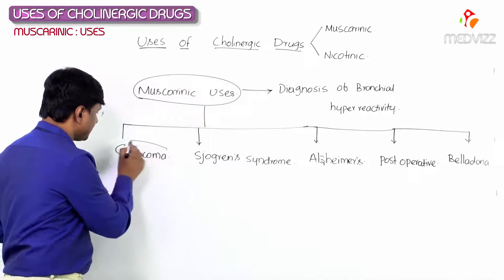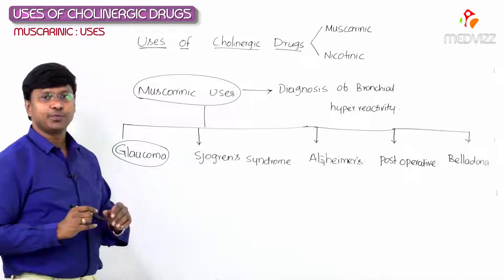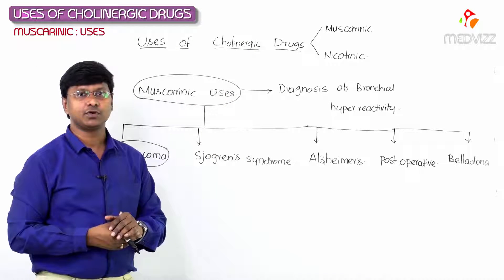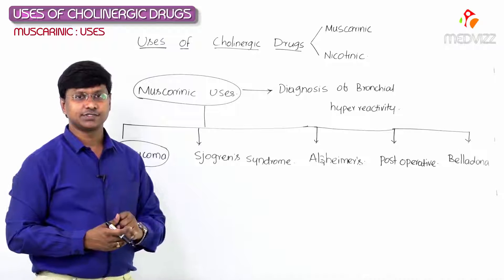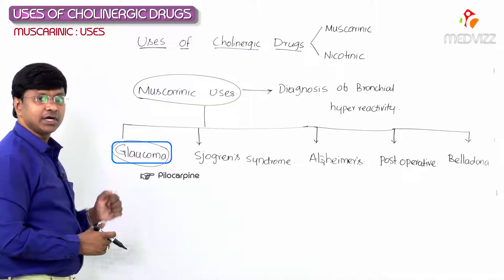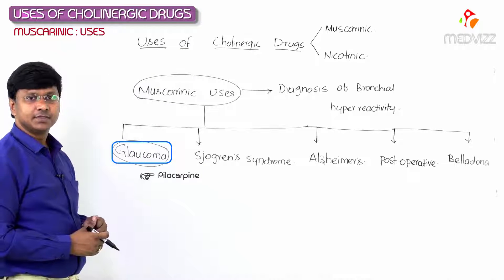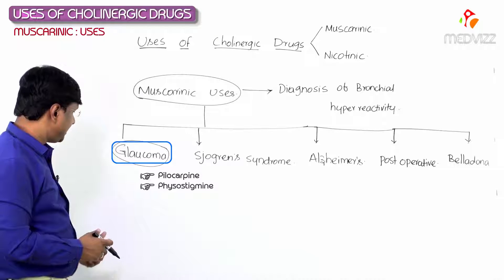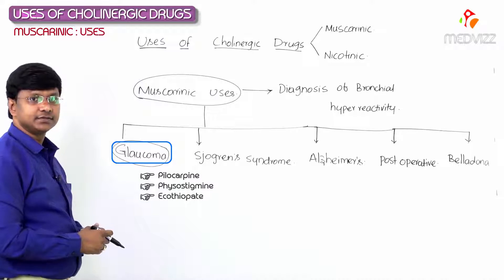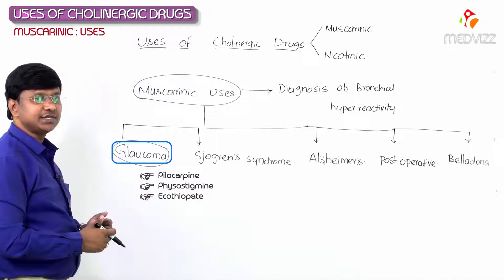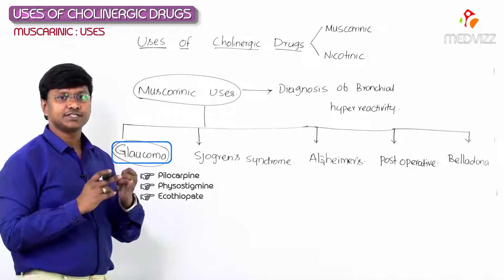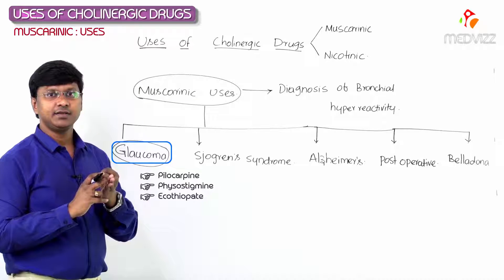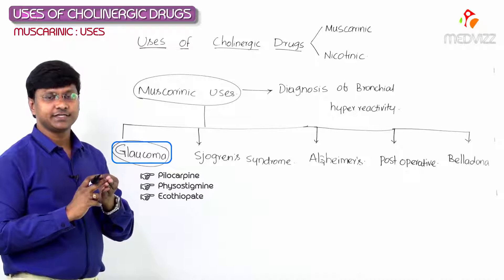Now, in the treatment of glaucoma there are three important cholinergic drugs: pilocarpine, physostigmine, and ecothiopate. These are the three drugs used in the treatment of glaucoma.